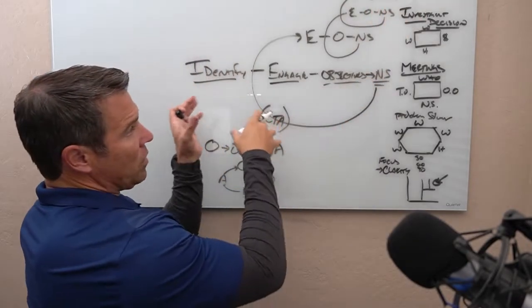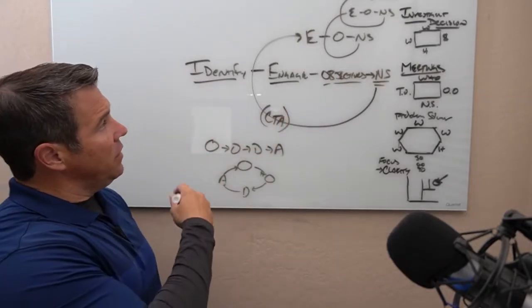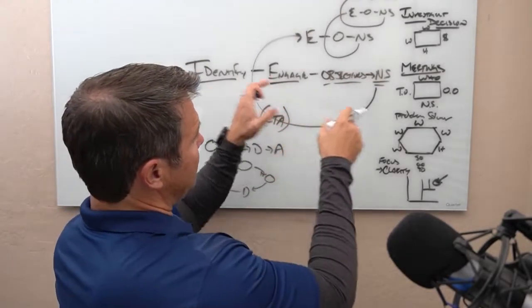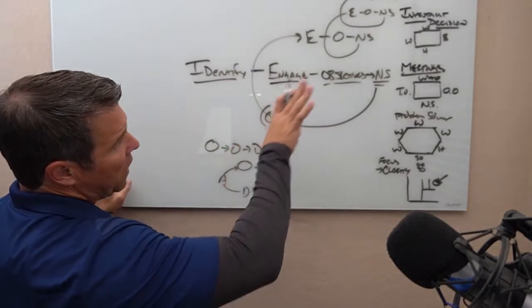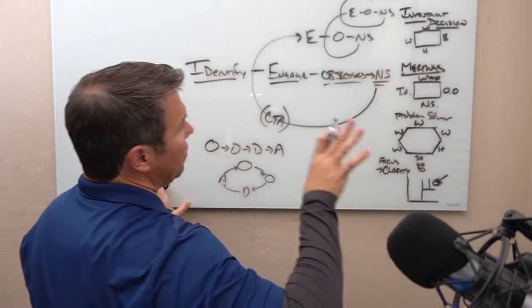And what we're doing is we're creating forward momentum with this model. It's not a closed loop. It's forward momentum. It's spiraling up and to the right. We want to go up and to the right here.